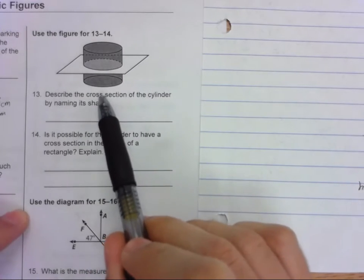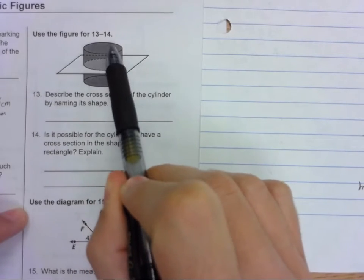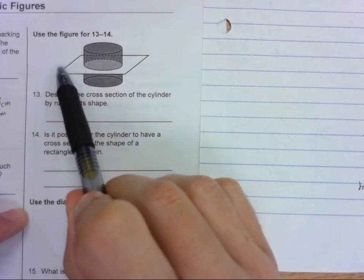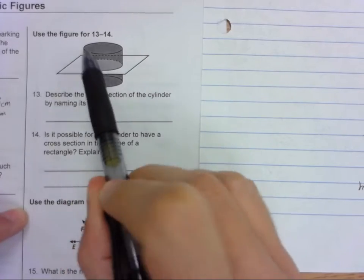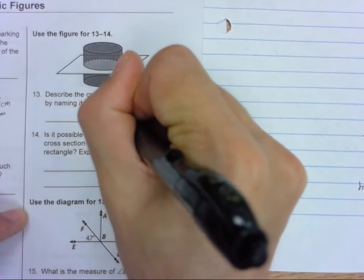Look at the cross-section. So we have a 3D cylinder here, and then we're cutting it with the plane, cutting it with a sheet of paper, and what shape ends up on the sheet of paper? That cross-section is a circle.